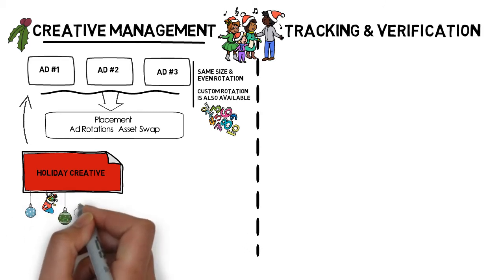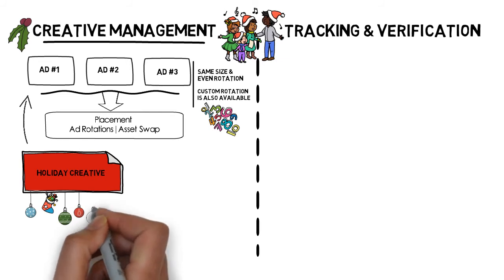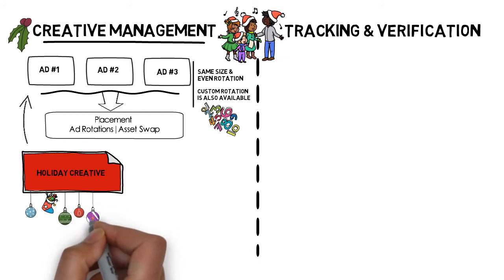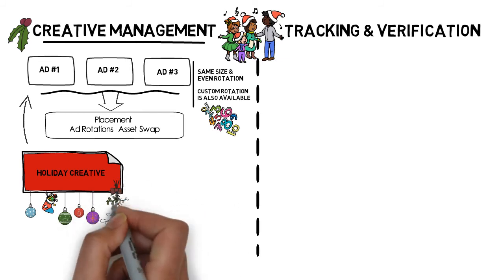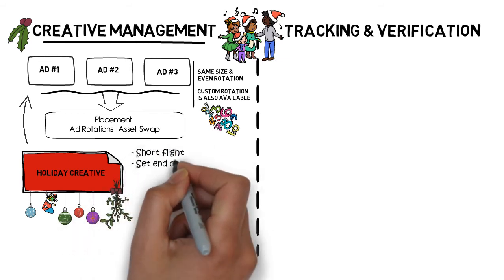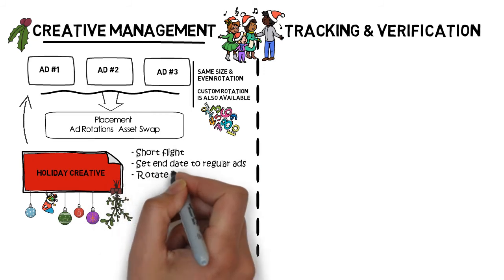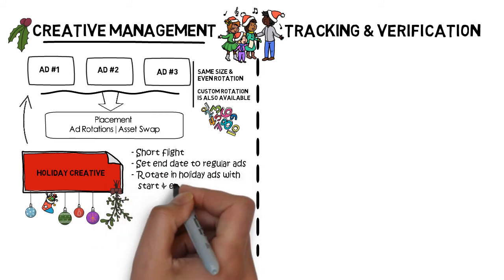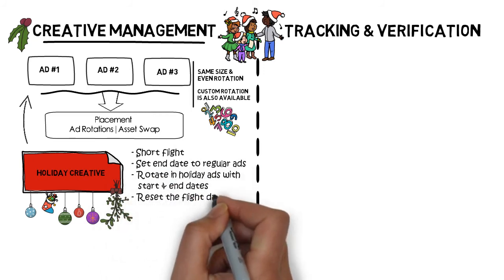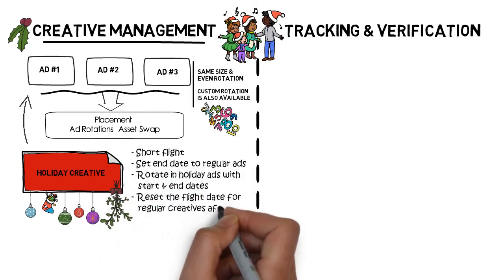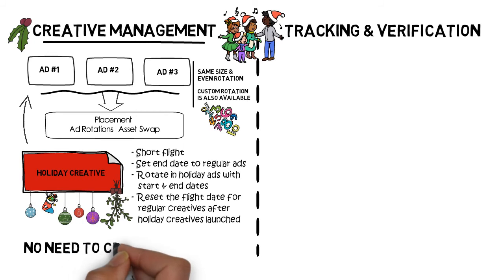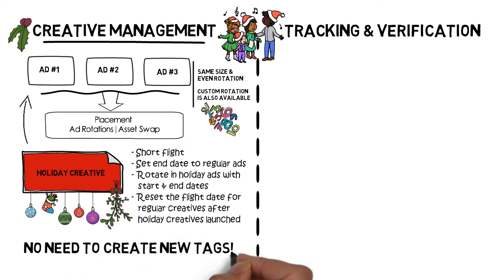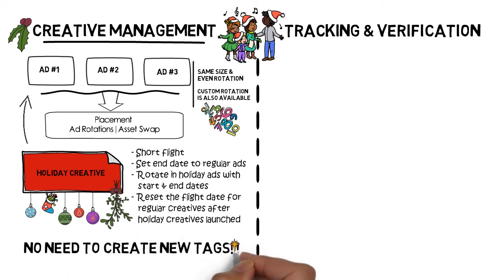In that case, you can set the end dates of your regular creatives and rotate in your holiday creative with a start and end date. All of these can be done prior to the holidays and without sending a new tag to publishers.